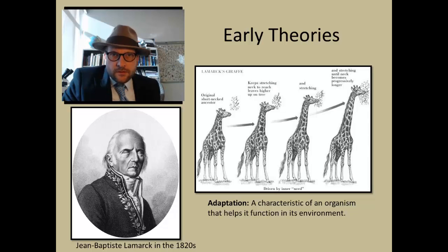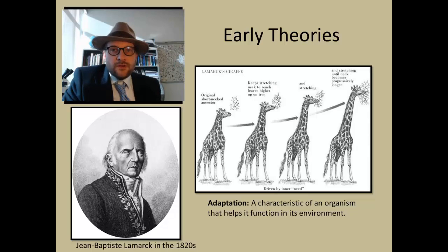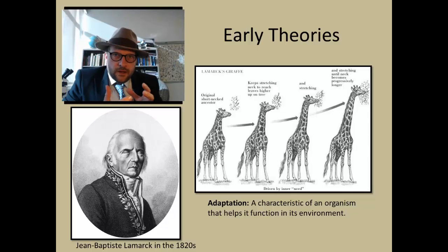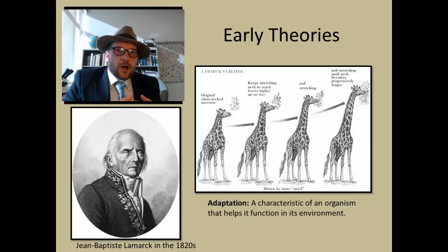Lamarck stated: 'All acquisitions wrought by nature on individuals, through the influence of the environment in which their race has long been placed, and hence through the influence of the predominant use or permanent disuse of any organ — all of these are preserved by reproduction to new individuals which arise, provided that the acquired modifications are common to both sexes.' The common example is the giraffe. Lamarck viewed that environmental influence would extend to the giraffe's neck, causing it to reach for higher and taller trees, and that this acquired inheritance was then passed on to offspring — hence his idea is often called acquired inheritance.